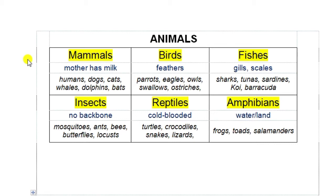We know mammals well — we ourselves are mammals: dogs, cats, whales, dolphins, bats, and so on. Another big group are the birds — one of the most obvious genes is that they have feathers, not fur. Fish don't have lungs like birds, mammals, reptiles, and amphibians — they have gills with which they breathe, and on their outside they don't have feathers or fur; they have scales.